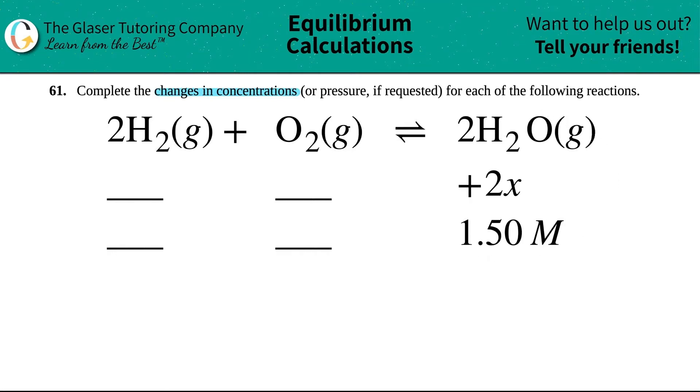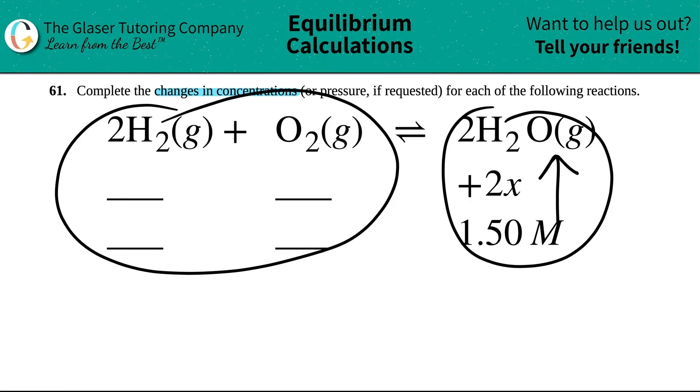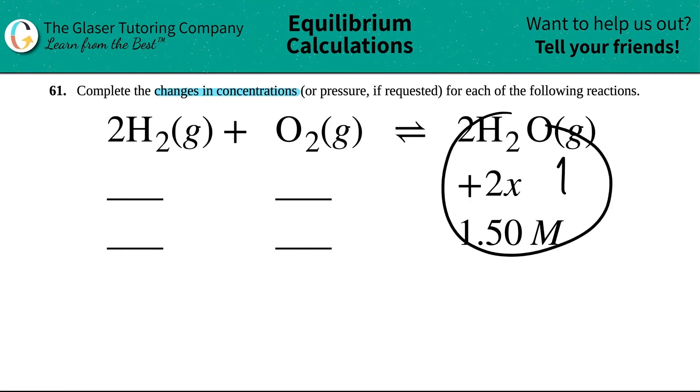We have to start with what we're given. They told us that the water vapor, the H2O gas, is increasing by a factor of 2X. This plus sign means that it's increasing. If this product is increasing, what do you think is going to happen to the reactants? If the product is increasing, the reactants have to decrease.